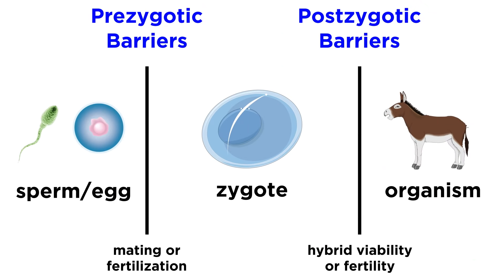This disruption can occur due to a variety of prezygotic or postzygotic barriers, meaning reproductive barriers that either impede mating or fertilization if prezygotic, or impede the viability and fertility of a hybrid should one form.